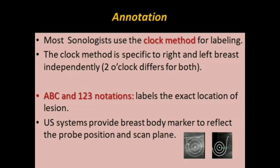The clock method is specific to the right and left breast independently. A lesion at two o'clock of one breast has a different location in the other breast — two o'clock has a different location for the right and left breasts. Another method which is adopted is called ABC with 1-2-3 notation.